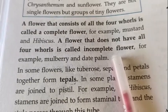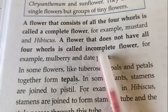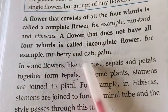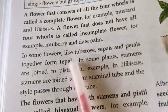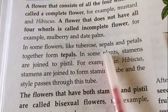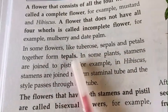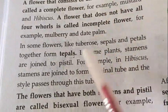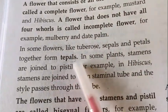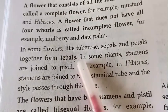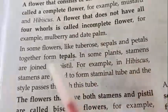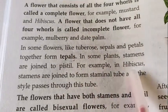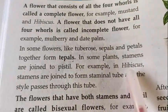A flower that does not have all the four whorls is called an incomplete flower. Among those four parts, if any one part is absent, that flower is called an incomplete flower — for example, mulberry and date palm. In some flowers like tuberose, sepals and petals together form tepals.